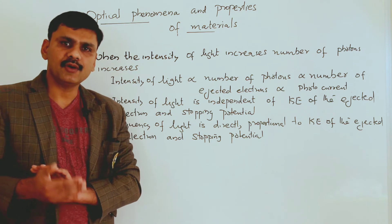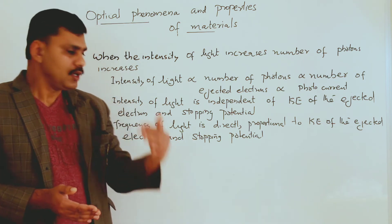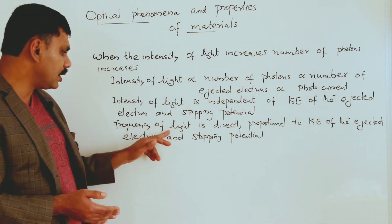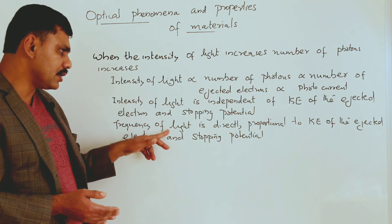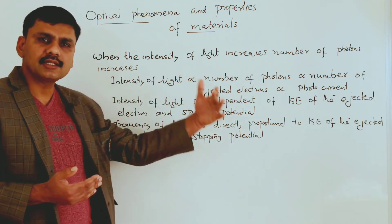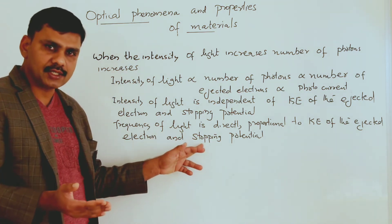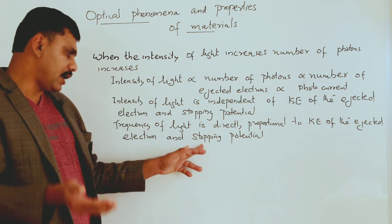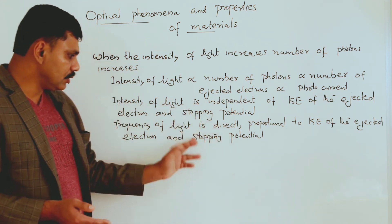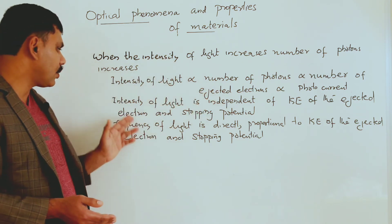If the ejected electrons have more energy, we have to apply more stopping voltage to stop the electrons from the cathode. So when frequency of light increases, the energy of the photon increases, which increases the kinetic energy of ejected electrons, requiring more stopping voltage. Only frequency can change the kinetic energy of the electron and the stopping voltage — intensity of light has no effect on these.